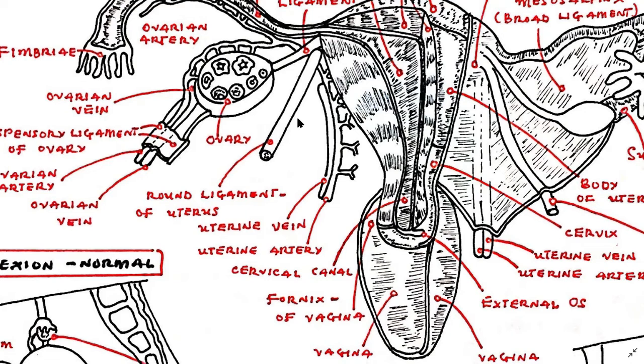The round ligament of the uterus originates at the uterine horns in the parametrium. It maintains the anteversion or bending forward position of the uterus, especially during pregnancy. It is supplied by the artery of the round ligament, which is also known as Samson's artery.